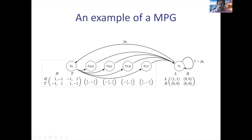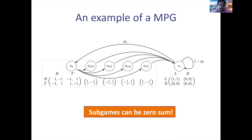So state s₁ is a potential game and the intermediate states were zero-sum, yet it can be shown that this is a Markov potential game — we can find a potential function φ satisfying the required property. Some games can be zero-sum in some states but the whole stochastic game is a Markov potential game. Markov potential games are more like cooperative games — people want to coordinate overall, but this doesn't mean they coordinate at every state; they might compete in some states.